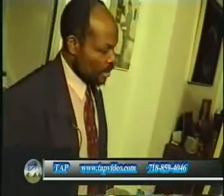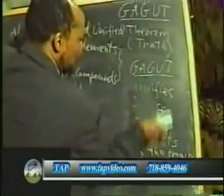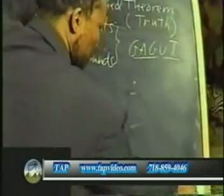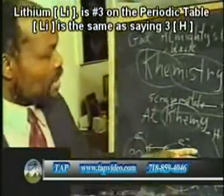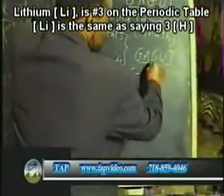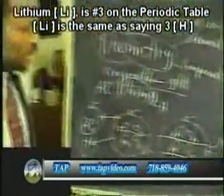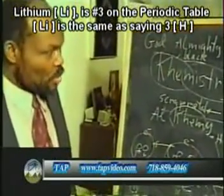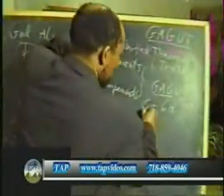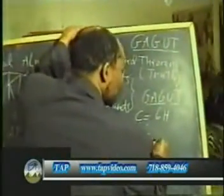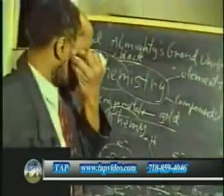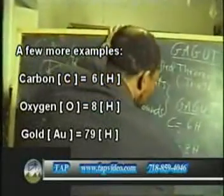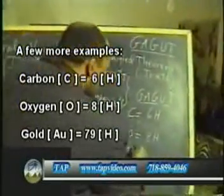Proceeding further: carbon, which is number six on the periodic chart, would be equivalent to six hydrogen units. Oxygen, which is number eight on the periodic chart, would be equivalent to eight hydrogen units.